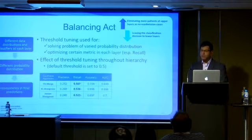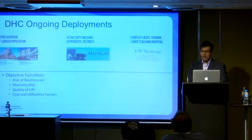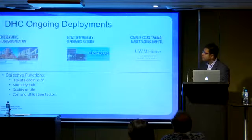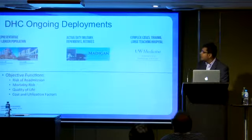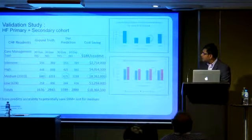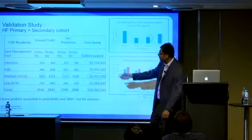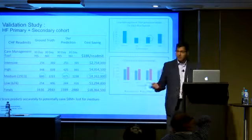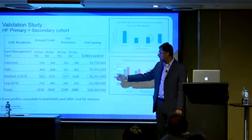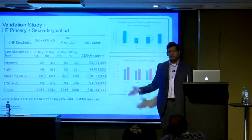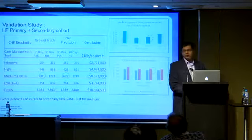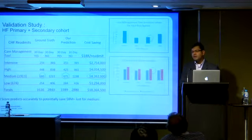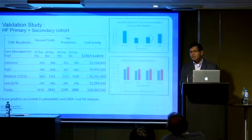Here are some data sets — I will leave the detailed results due to lack of time but they are all in the paper. Our ongoing deployments include UW Medicine, Madigan — a large active duty army provider — and MultiCare. Out of 360 patients that readmitted for 30-day readmission in the medium category, we were accurately able to predict 675 of them. Once you show confusion matrices like this to a clinician, there is nothing they can do but accept that your model is better.